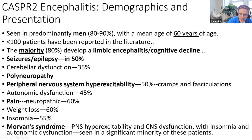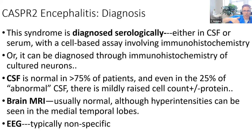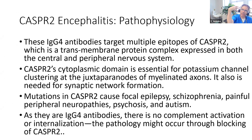Some patients develop Morvan syndrome - hyperexcitability of the peripheral nervous system, CNS dysfunction, terrible insomnia, terrible autonomic dysfunction, and neuromyotonia. This is seen in a minority of CASPR2 encephalitis patients. You can diagnose it by looking at antibodies in serum or CSF. The CSF frequently looks very normal, and the brain MRI is frequently normal. You really have to think of these autoantibodies. Like LGI1, it's an IgG4 antibody, targeting CASPR2 - a transmembrane protein found in both CNS and PNS, essential for potassium channel clustering and synaptic network formation.